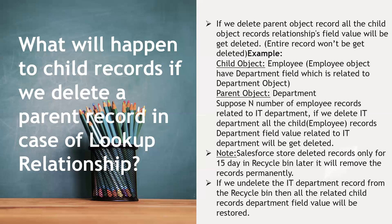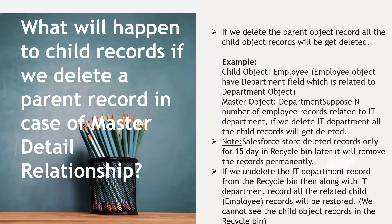If we undelete the ID Department record from the recycle bin, all related child records' Department field values will be restored. Next: what will happen to child records if we delete a parent record in case of a master-detail relationship? If we delete the parent object record, all associated child records will also get deleted.